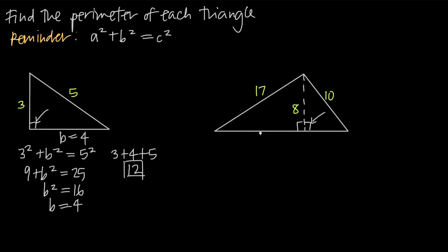Let's go ahead and call this side — the base on the left hand side — B sub one, or the first base, and this we'll call B sub two, or the second base. So if we want to find the base of the triangle on the left here, everything to the left of this dashed line, we'll use the Pythagorean theorem.